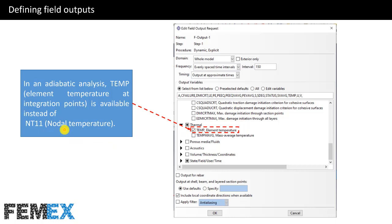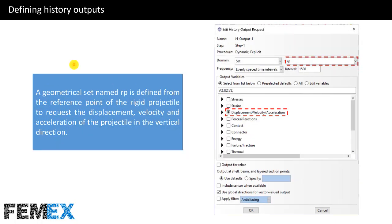In an adiabatic analysis, TEMP is available instead of NT11. NT11 is the nodal temperature, while TEMP is the element temperature at integration points. I have also defined history outputs: a geometrical set named RP is defined from the reference point of the rigid projectile to request displacement, velocity, and acceleration in the vertical direction — A2, U2, and V2 for the RP set.